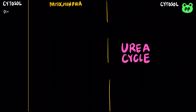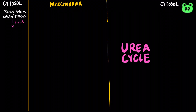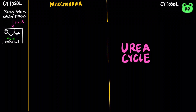Excess amino acids derived from dietary proteins and cellular proteins are catabolized in the liver. The ammonia generated in this process is either recycled for biosynthetic pathways or excreted as urea during the urea cycle.